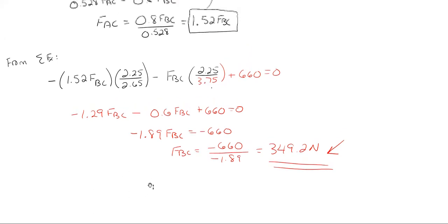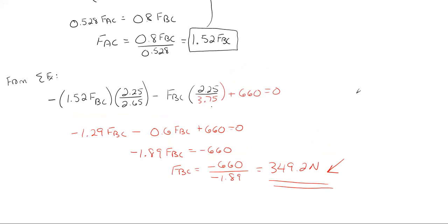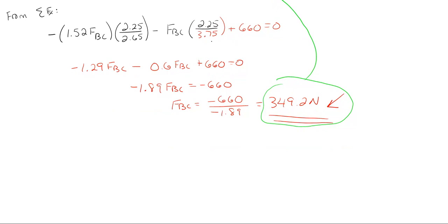So there's one of my answers. And what I can do is that I already have FAC in terms of FBC. So I can take this value here of the 349.2 and plug it into this equation. And I can get what FAC is. So FAC is 1.52 FBC. So 1.52 times 349.2 Newtons gives me a total of 530.78 Newtons in that general upward left direction. So those are the two forces that we are tasked with finding the two tensions in each cable.